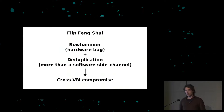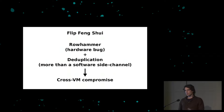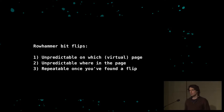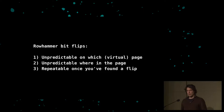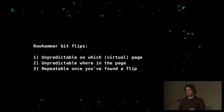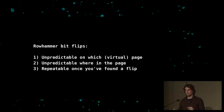In our attack, an attacker controls one virtual machine and takes over another virtual machine on the same system. Rowhammer is a very powerful attack but difficult to exploit: you can corrupt bits, but you don't really control which physical bits in memory are vulnerable. If you can flip bits, the data being corrupted has to be useful to you — you have a problem getting the right data into the right location.